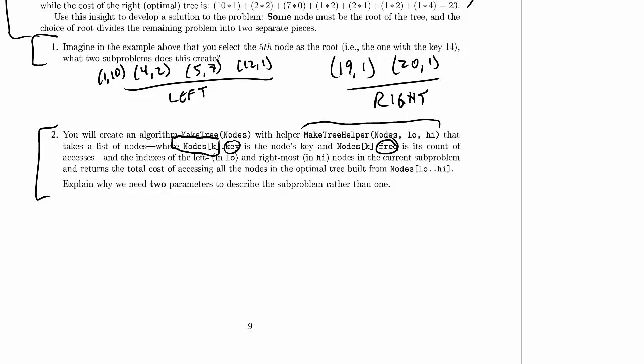And the indexes of the leftmost and rightmost nodes in the current subproblem, so low and high, and it should return the total cost of accessing all the nodes in the optimal tree built from nodes low up to high, so just this portion of the array. So the question is, why do we need two parameters to describe the subproblem rather than one?